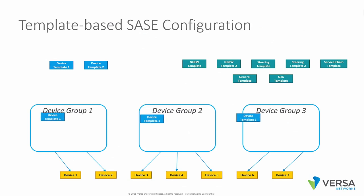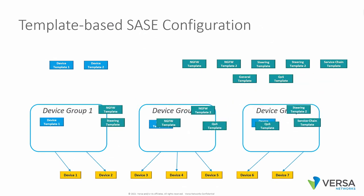Each of the device groups will contain information about what kind of template is going to be used, which will dictate which ports are going to be used and what main services are going to be running on that device. Usually there is only one device template per device group. Then we have another type of templates called service templates, and those service templates can be mixed and matched.